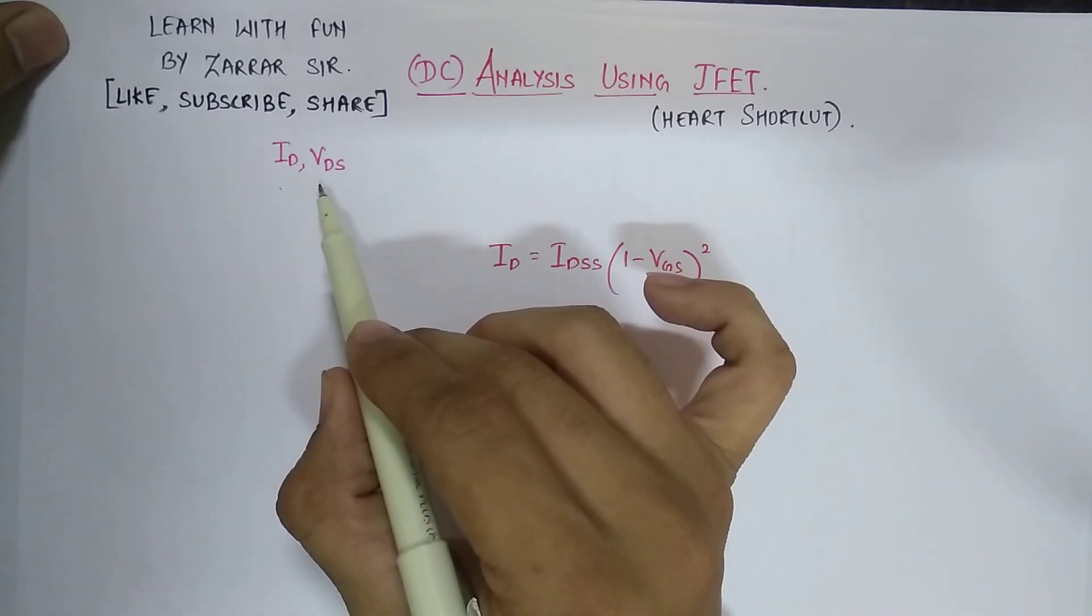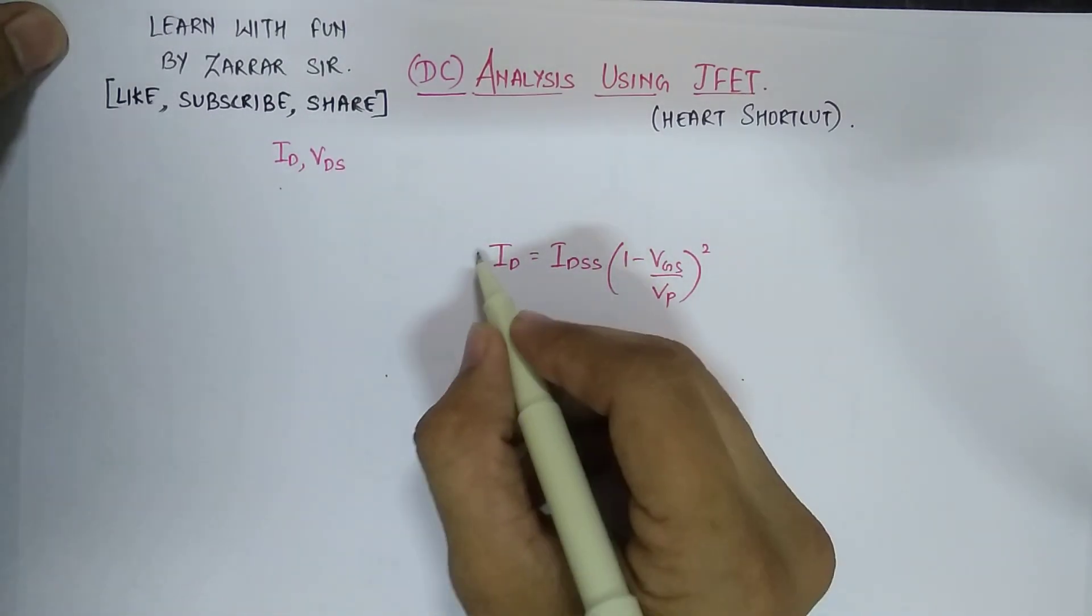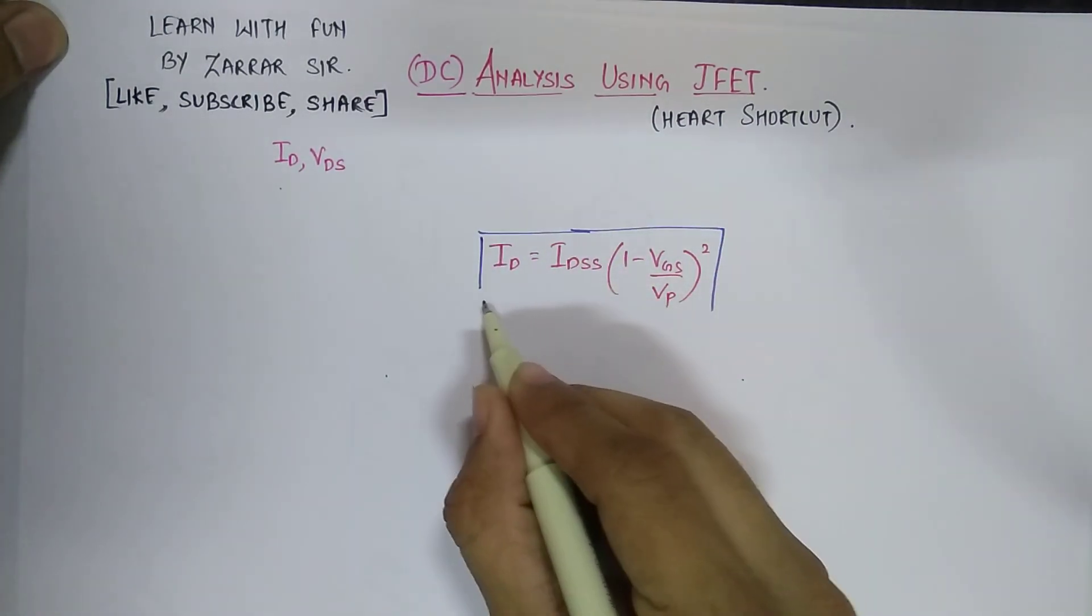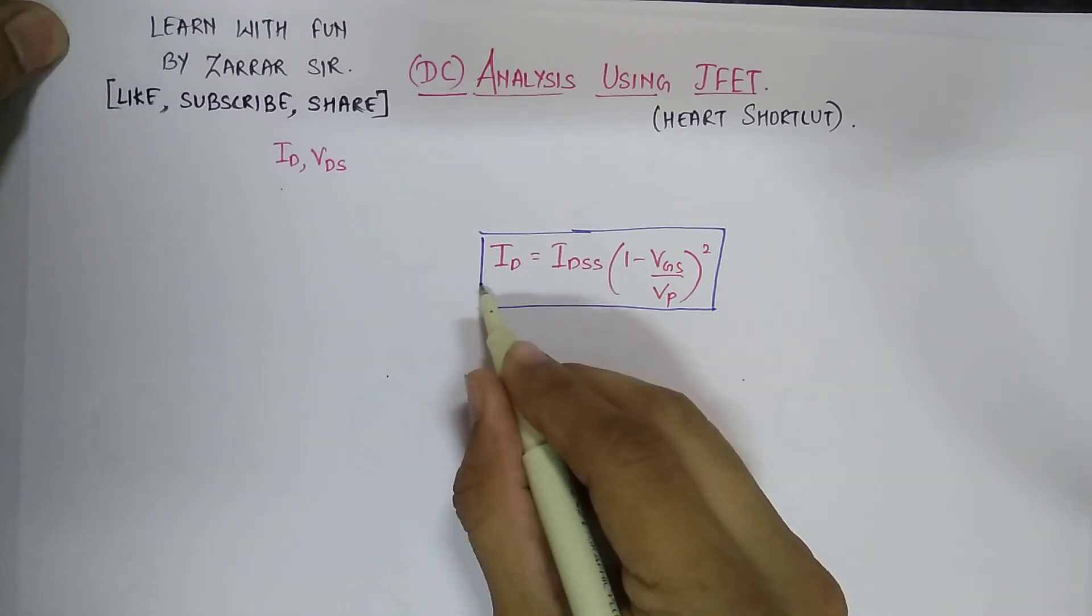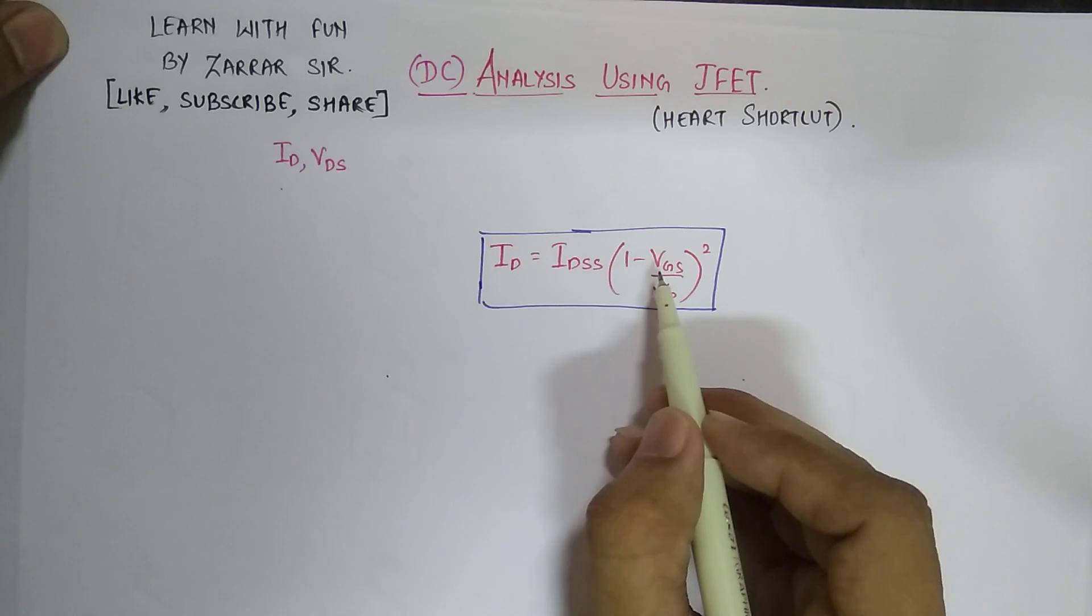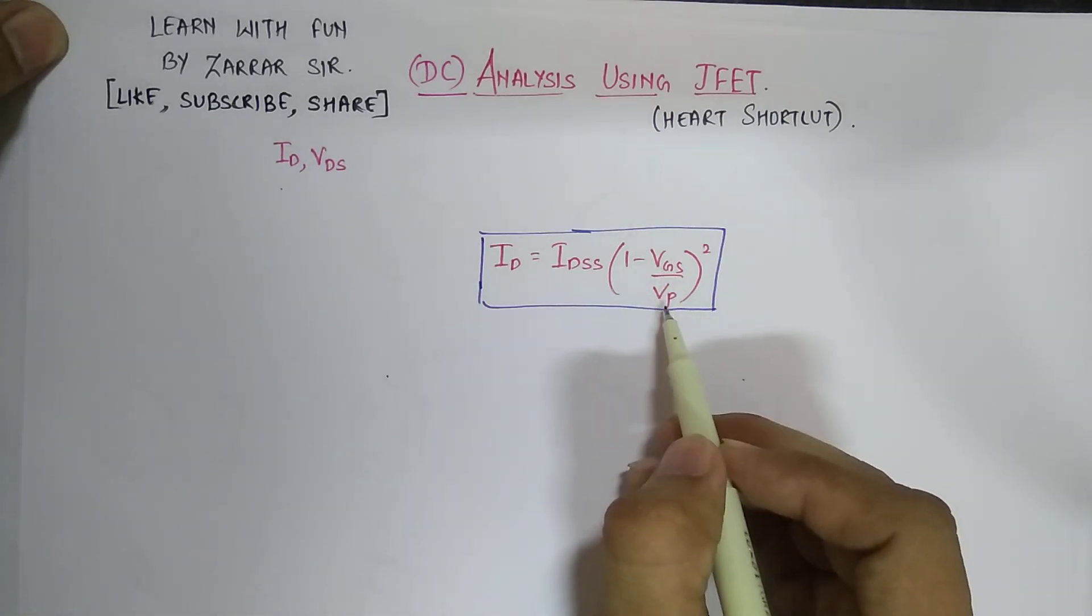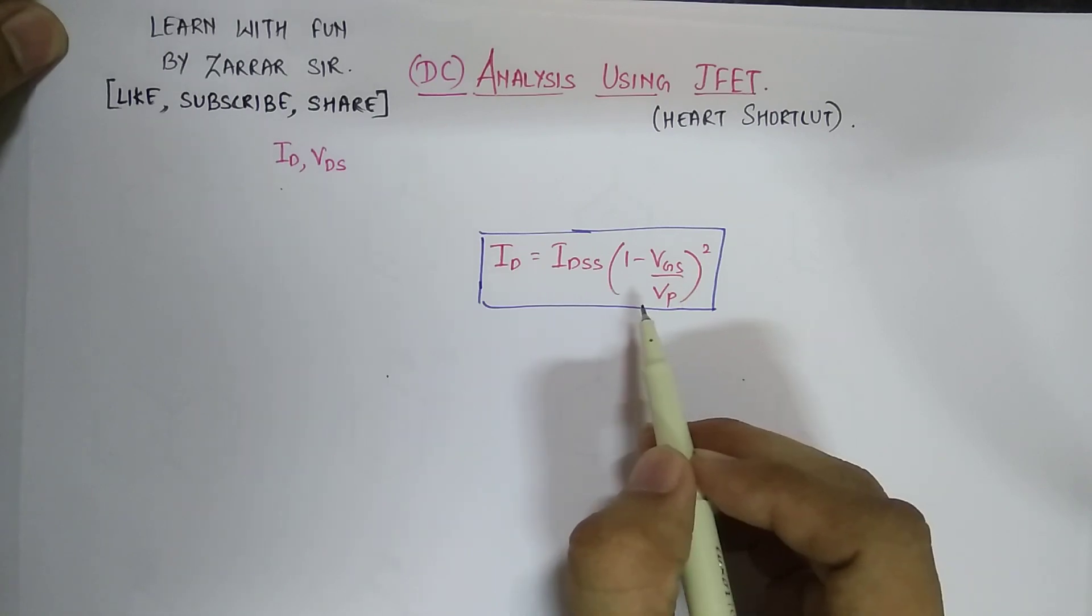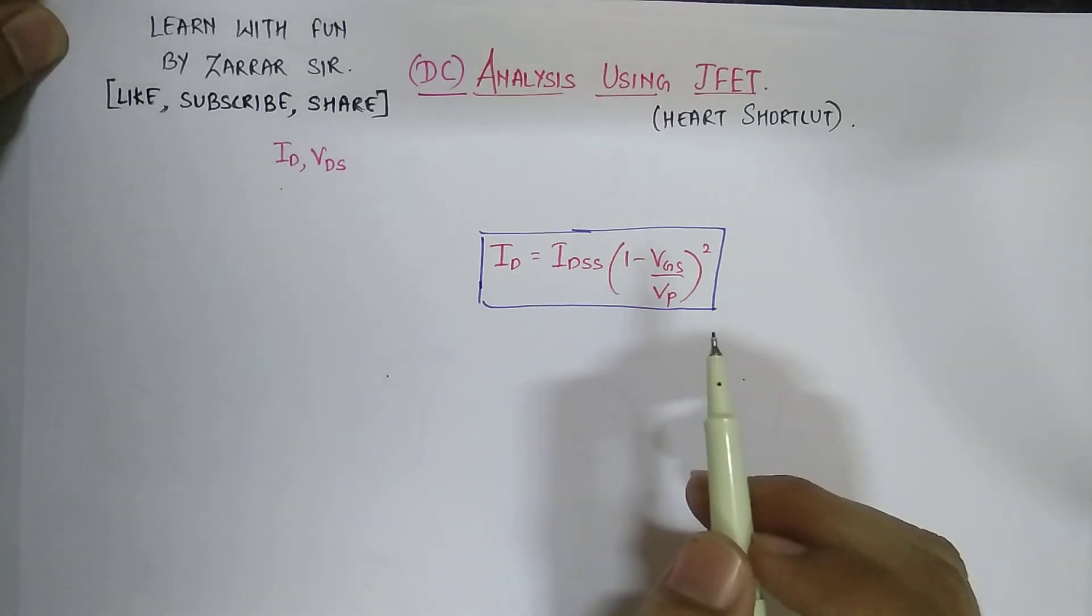need to find ID and VDS. The very important formula is ID equals IDSS times (1 minus VGS upon VP) whole square, where IDSS is drain to source saturation current, VGS is gate to source voltage, and VP is pinch-off voltage. Do remember this formula - it is also known as Shockley's equation.